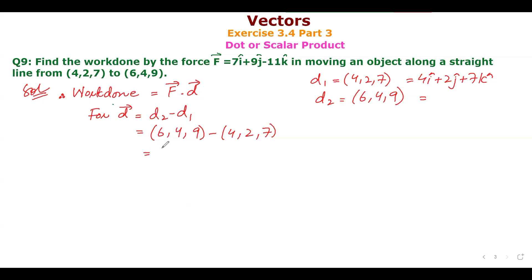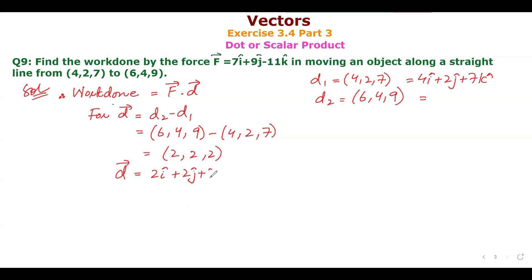So displacement d = (6-4)i + (4-2)j + (9-7)k = 2i + 2j + 2k. This is displacement in vector form.